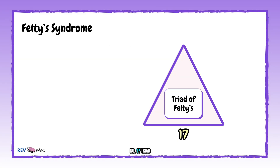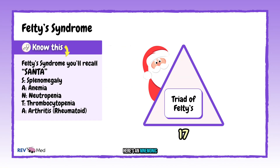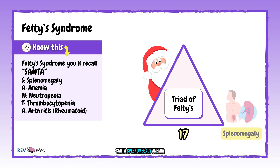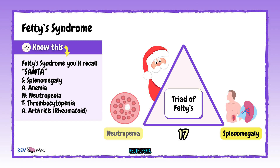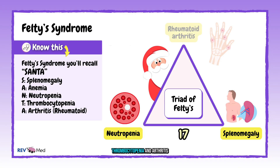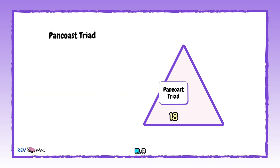Number seventeen: triad of Felty's syndrome — a complication of rheumatoid arthritis. Here's a mnemonic: SANTA — splenomegaly, anemia, neutropenia, thrombocytopenia, and arthritis.